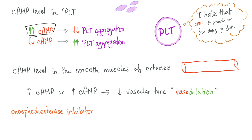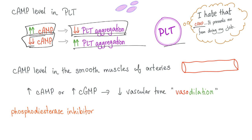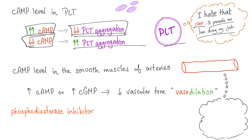When you have high levels of cyclic AMP in platelets, you have less platelet aggregation. When you have low cyclic AMP, you have increased platelet aggregation. That's why platelets hate cyclic AMP — it interferes with their mission. Cyclic AMP in the smooth muscles of arteries, however, when increased, causes decreased vascular tone — vasodilation. Same thing with increased cyclic GMP. So it depends on the tissue.